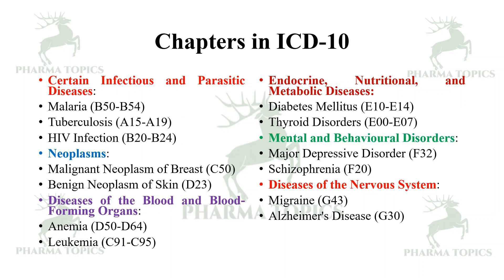Let us see some ICD codes. For certain infections and parasitic diseases such as malaria and tuberculosis, there are designated codes. For neoplasms, codes cover malignant neoplasm of the breast and benign neoplasm of skin. Codes are also provided for diseases of blood and blood-forming organs such as anemia and leukemia, endocrine nutritional and metabolic disorders like diabetes and thyroid disorders, and mental and behavioral disorders such as major depressive disorder and schizophrenia, as well as diseases of the nervous system like migraine and Alzheimer's disease.